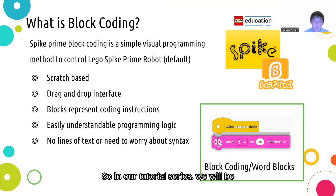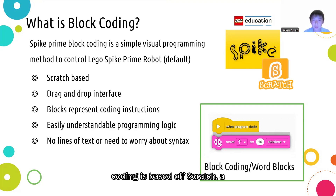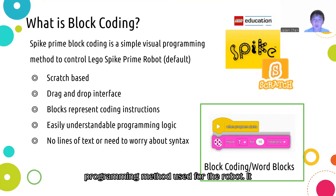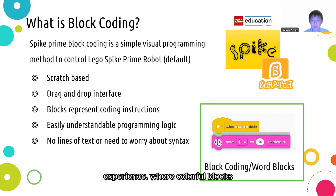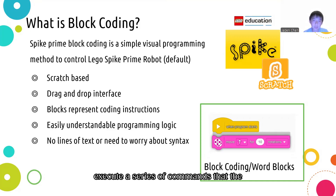So in our tutorial series, we will be using block coding in order to program the Spike Prime robot. So before we dive into programming, let's get familiar with what it exactly is. Spike Prime's block coding is based off Scratch, a programming website you may have heard or used before, and it is the default programming method used for the robot. It is a simple and heavily visually based experience, where colorful blocks represent coding instructions, and by using a drag and drop interface to attach a combination of blocks, you can execute a series of commands that the Spike Prime robot will follow.